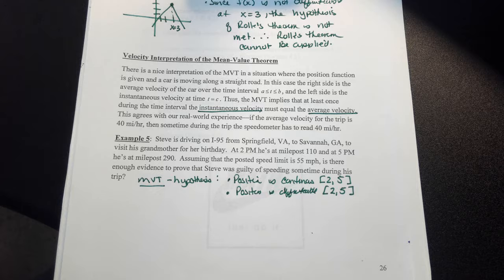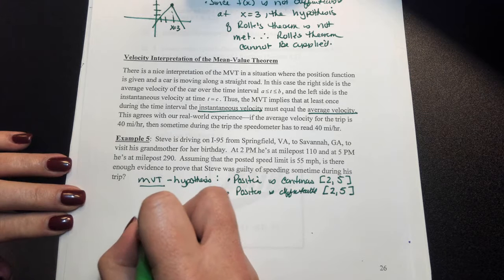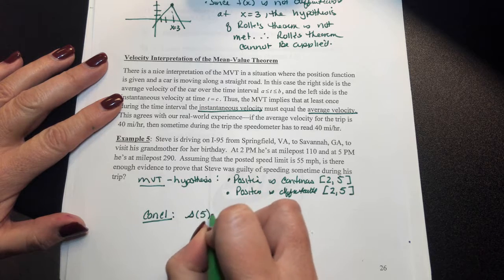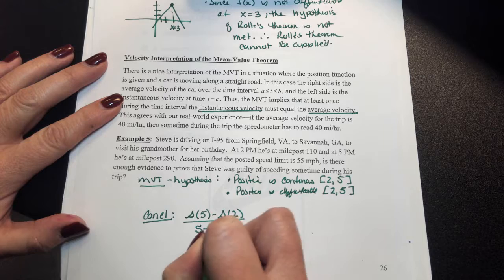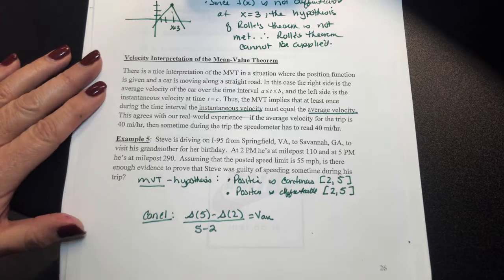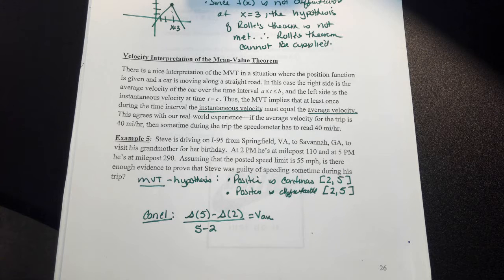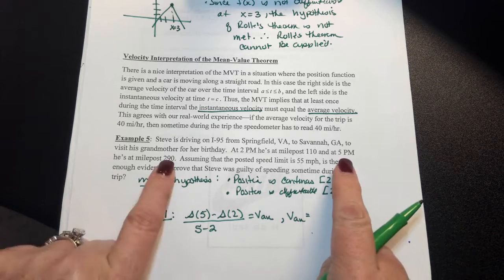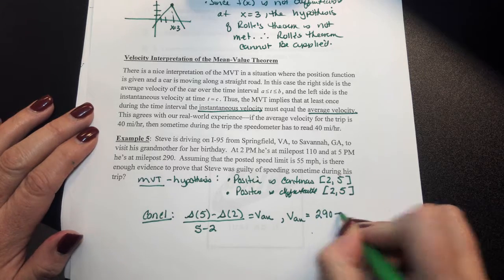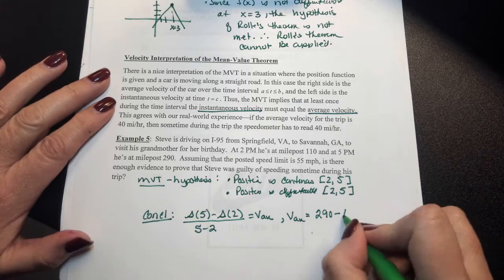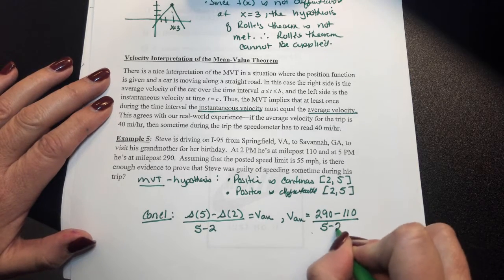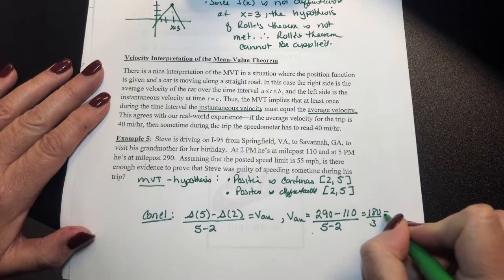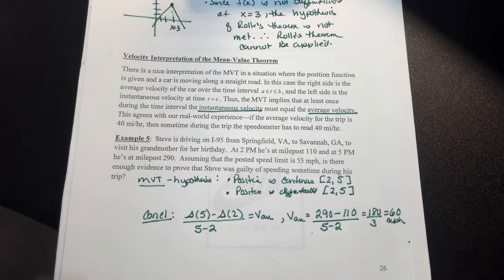Now, to see whether or not Steve was speeding, we want to find his average velocity over this particular time period. I can find my S of 5 minus S of 2 all over 5 minus 2. And again, this is your average velocity. They're telling you his position at 5 p.m. was 290. His position at 2 was 110. All over 5 minus 2. 290 minus 110 is 180 over 3, which is 60.